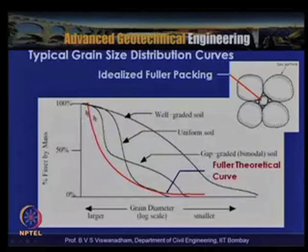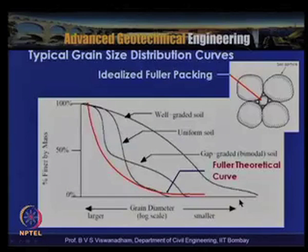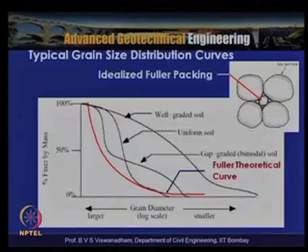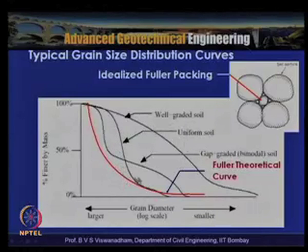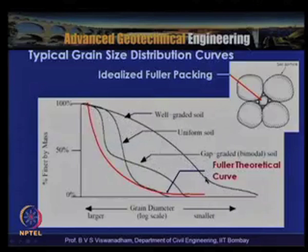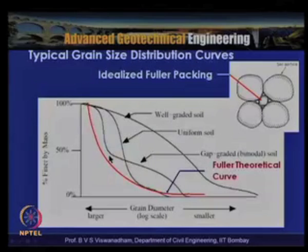The particle sizes vary from large to small and the soil mass can have a wide range of particles. If the soil mass has uniformly sized particles it is called poorly graded or uniformly graded (slope near unity). A very flat curve indicates well-distributed particles (well-graded), and a stepped curve indicates gap-graded or bimodal soil.